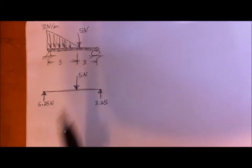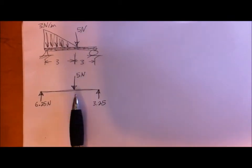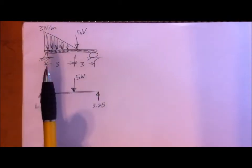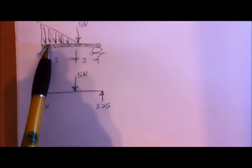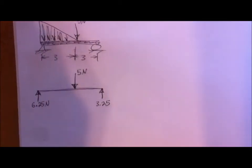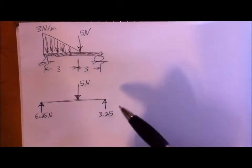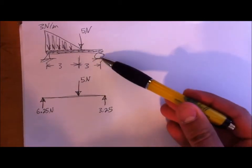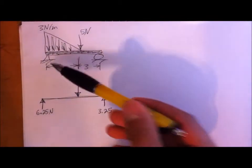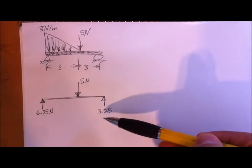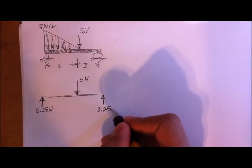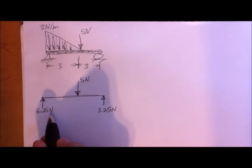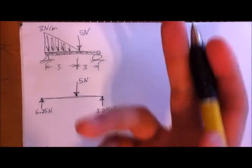Continuing on from our previous problem, I'm going to show you how to draw the shear and moment diagram for this problem. After calculating the reaction forces from the roller and the pin, which we got 3.25 N and then 6.25 N directed upward.